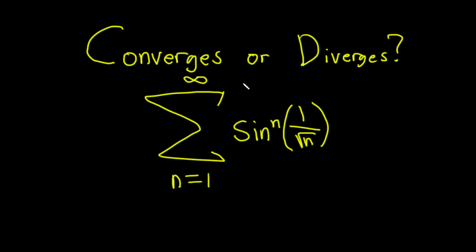The sum runs from 1 to infinity and it's the sine of 1 over the square root of n also the nth power. So you could think of this as sine of 1 over square root n and it's all being raised to the nth power.